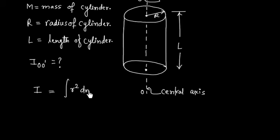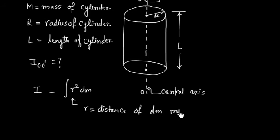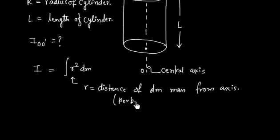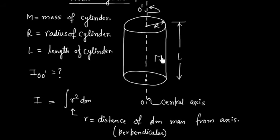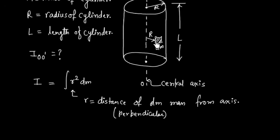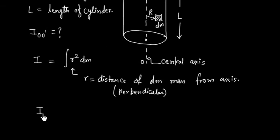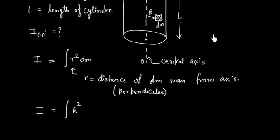Moment of inertia is given by the formula I equals the integral of R squared dm, where R is the distance of mass element dm from the axis. Let us consider any small patch or small mass dm on the periphery of this cylinder. This is situated at a distance of capital R from the axis, which is the perpendicular distance — the radius of the cylinder.